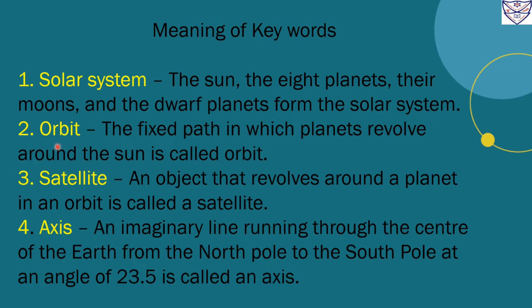Number 2. Orbit. The fixed path in which planets revolve around the sun is called orbit.